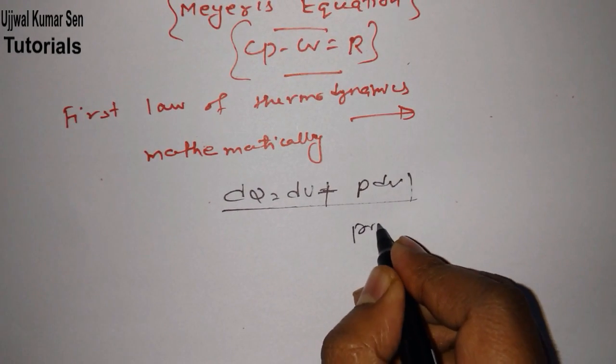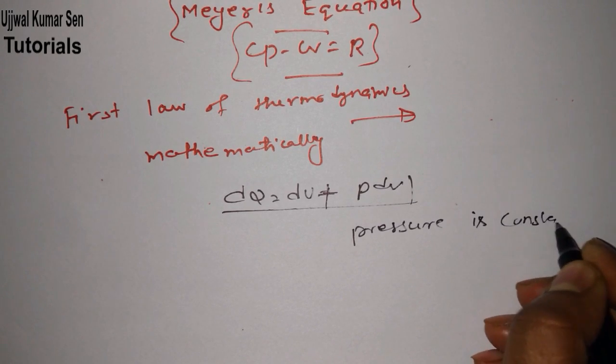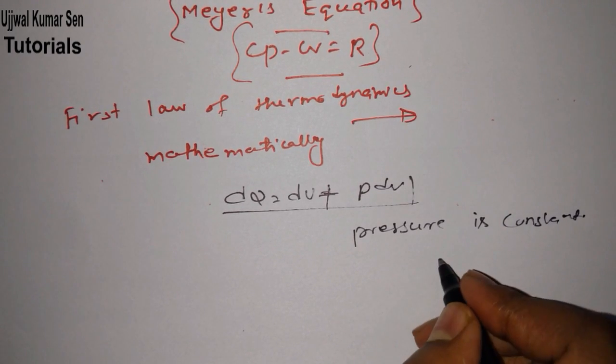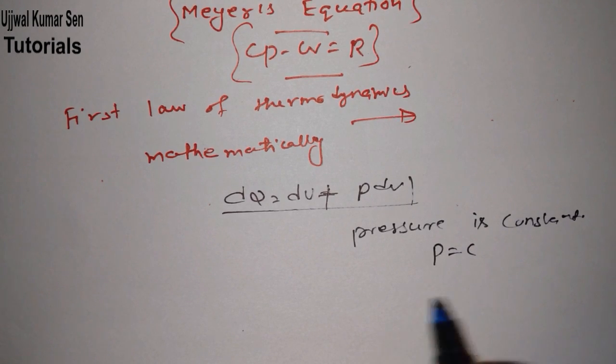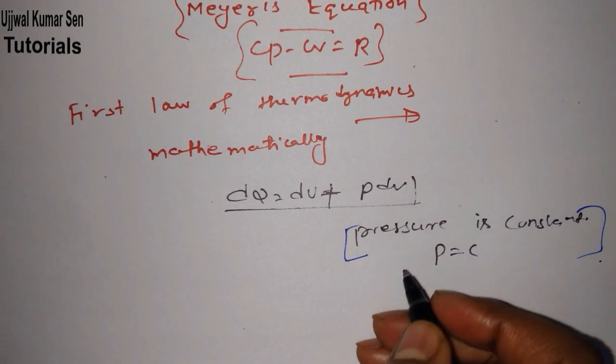If I am considering here that pressure is constant, in short we can write P is equal to C. We can write this, pressure is constant.